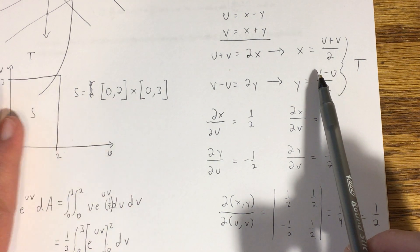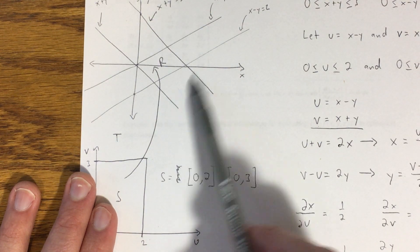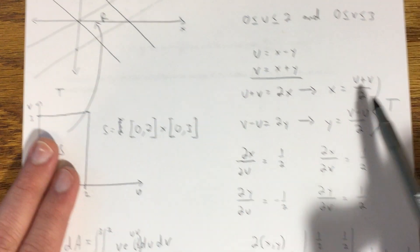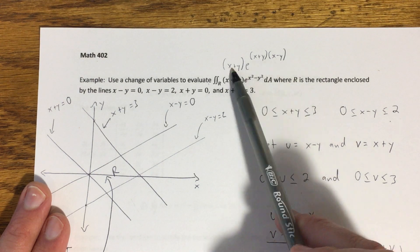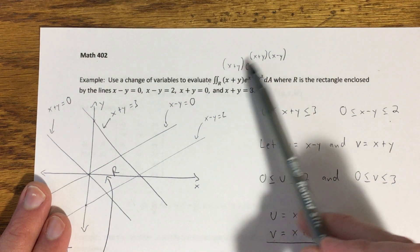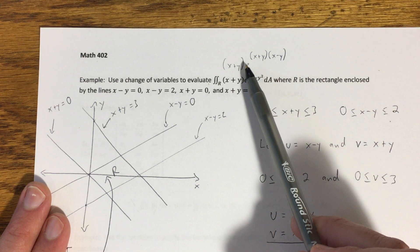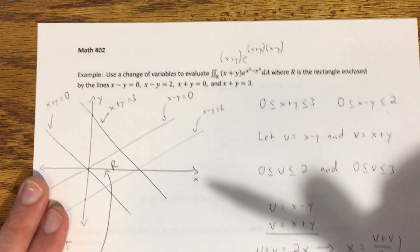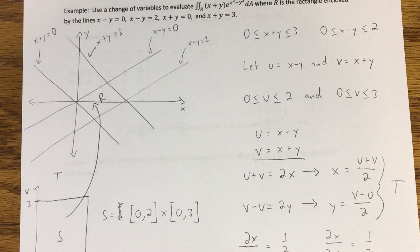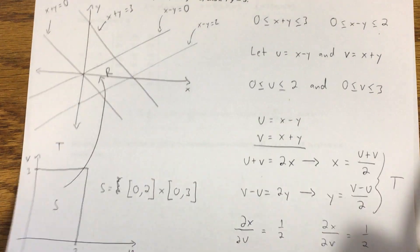And again, usually we're looking to the region first to suggest what that transformation is. Now, if you're still struggling with what the transformation should look like, sometimes the integrand also provides a good clue. So again, we saw x plus y's and x minus y's showing up in here. It may occur to you after looking at this integrand, after factoring here, that one of your variables should be x plus y and the other one should be the x minus y. But there's not a universal rule for how to know what the best change of variable is.